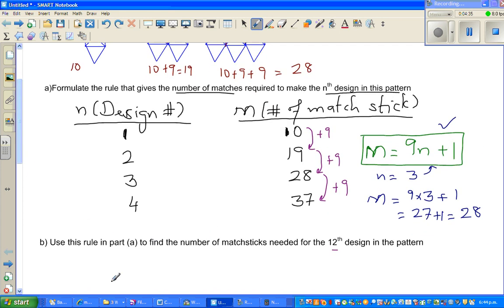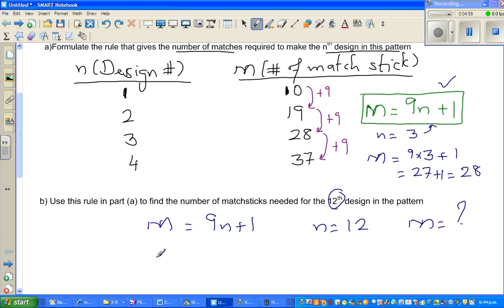Now, the next question is, use this rule in part A to find the number of matchsticks for the 12th design. So basically they're asking you, if m is 9n plus 1 and n is 12, what is m? So you have to simply put 12 into this equation.